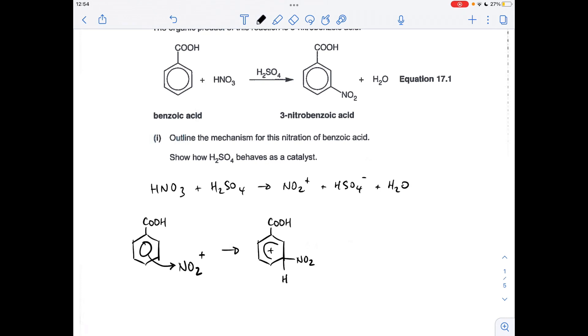Next, we take a pair of electrons from the C-H bond back to reform the delocalised ring of pi electrons, which gives us the organic product and an H+ ion.